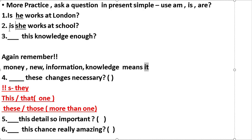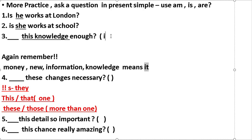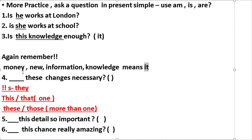Example: 'This knowledge is enough.' 'Knowledge' counts as 'it', so we use 'is'. Remember: money, news, information, knowledge — these words are treated as singular 'it', so we use 'is'.